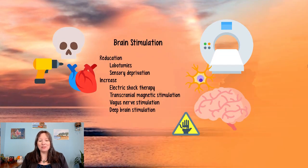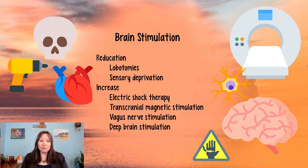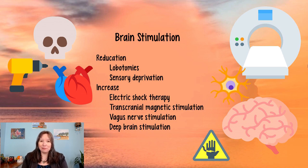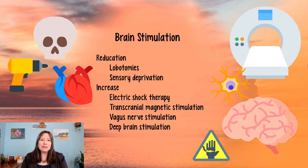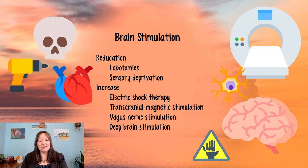In clinical psychology, brain stimulation is one technique used in the biomedical model. It can take different forms — some involve reducing stimulation. One reduction strategy is the lobotomy, which became more popular in the 1900s but has archaeological records going back tens of thousands of years. Lobotomies involve making part of the brain numb or inactive through laser, surgery, or freezing — or even removing parts of the brain. They are much less common today, as there are less invasive alternatives.